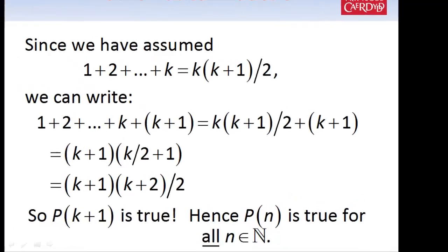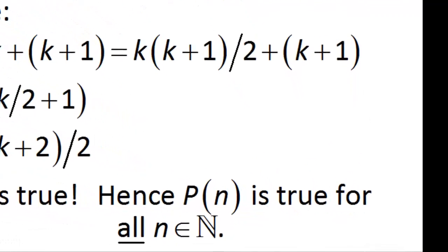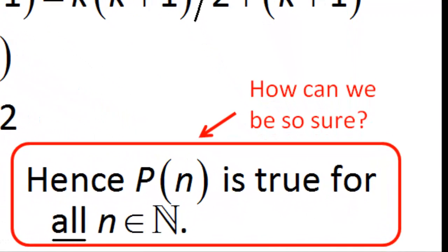Let's just reflect on this for a moment and ask ourselves: how can we really be so sure that this statement is true? What we're really saying is that our statement holds when n equals 1, it holds when n equals 2, it holds when n equals 3, and so on. So we're saying that we've proved that our statement holds in an infinite number of different cases, and we haven't really done that much work.